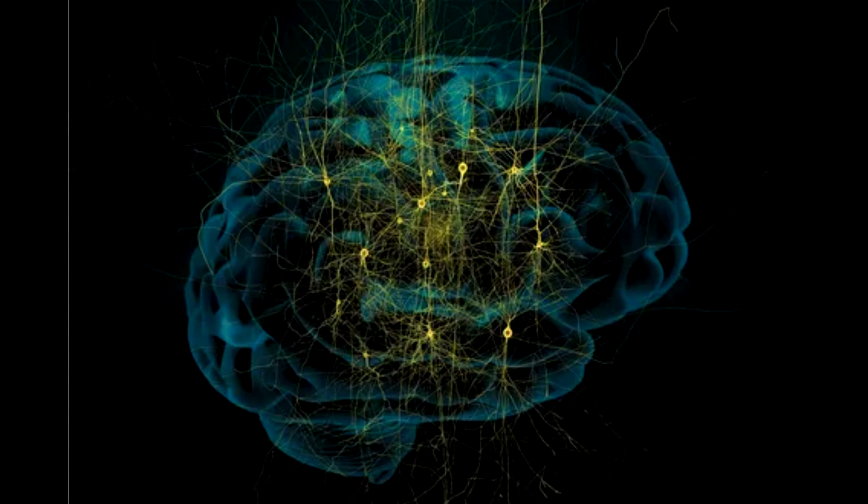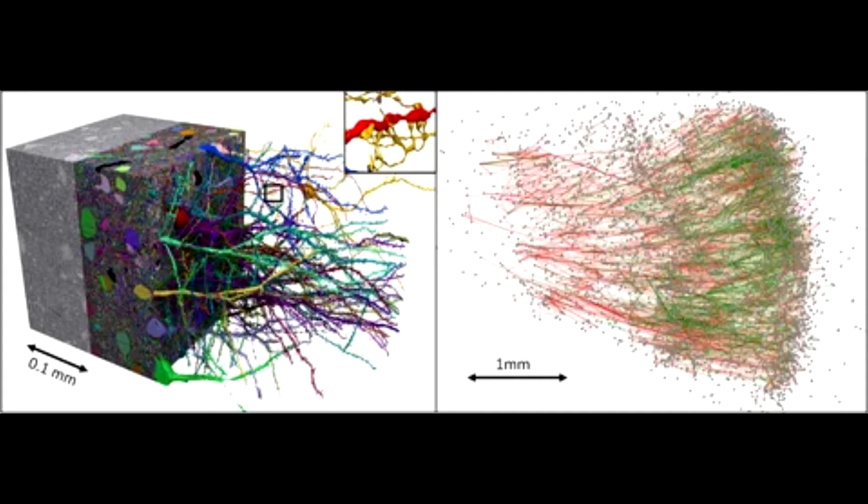Identifying the functionally distinct types of neurons is central to any bottom-up understanding of how the brain works. The different cell types are the brain's elementary computational elements, the components from which the larger machine is made. We have known of some cell types for more than a century, but the coverage has been spotty and anecdotal. This is changing. It is now possible to assemble more or less complete inventories of cell types, the brain's parts list, upon which all understandings of brain function depend.